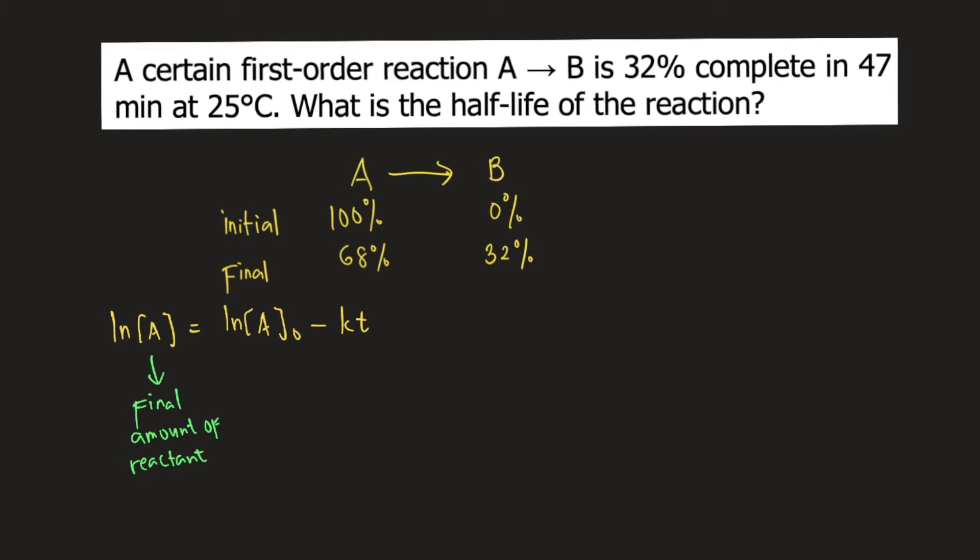A0 is the initial amount of reactant. K is the rate constant, and T is time.